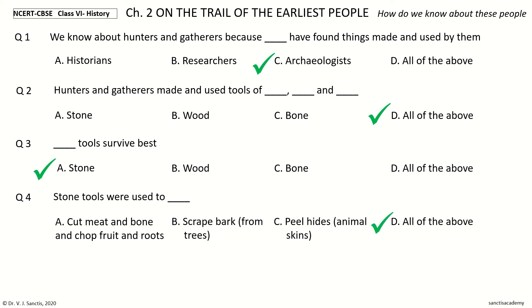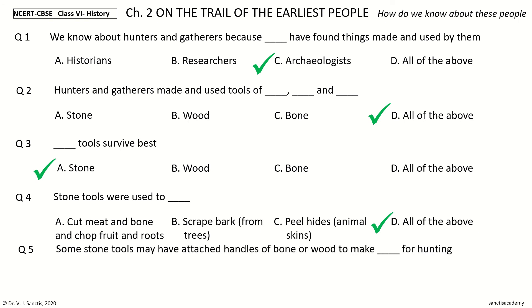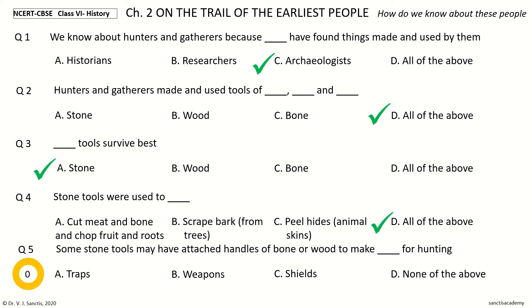Question 5: Some stone tools may have been attached to handles of bone or wood to make ___ for hunting. The options: traps, weapons, weapons and shields, none of the above. Your time. And the answer is weapons.